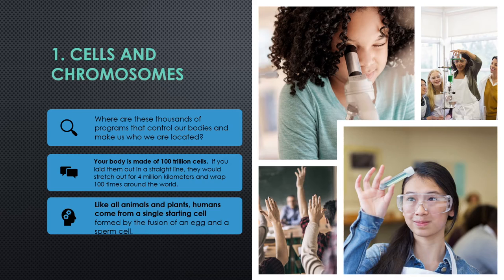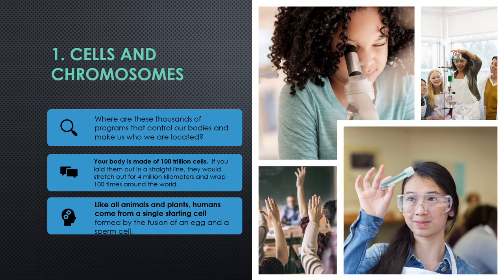Your body is made of 100 trillion cells. If we lay them all out in a straight line, they would stretch out for 4 million kilometers and wrap 100 times around the world. The egg cell is actually the largest human cell and at one-tenth of a millimeter in size, it's barely visible to the human eye.